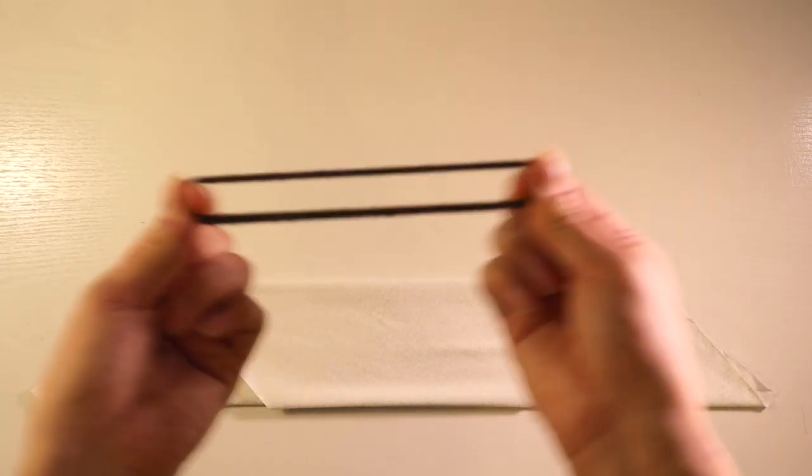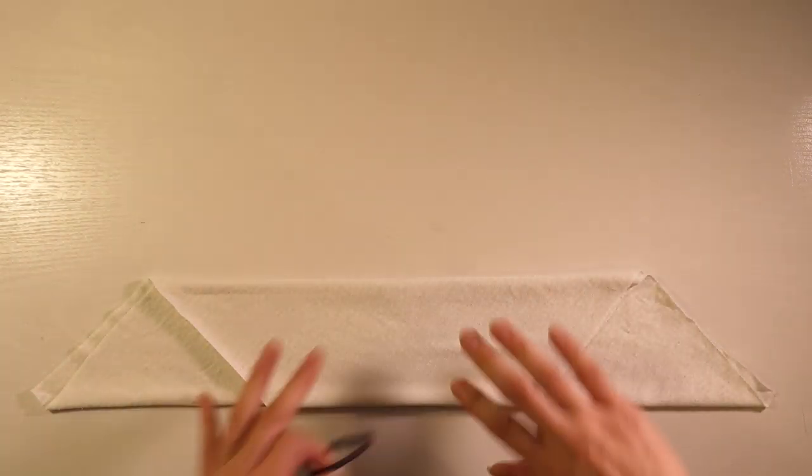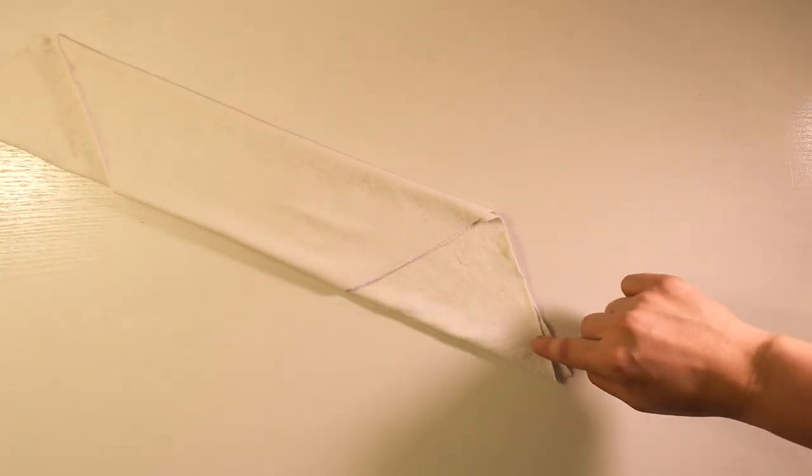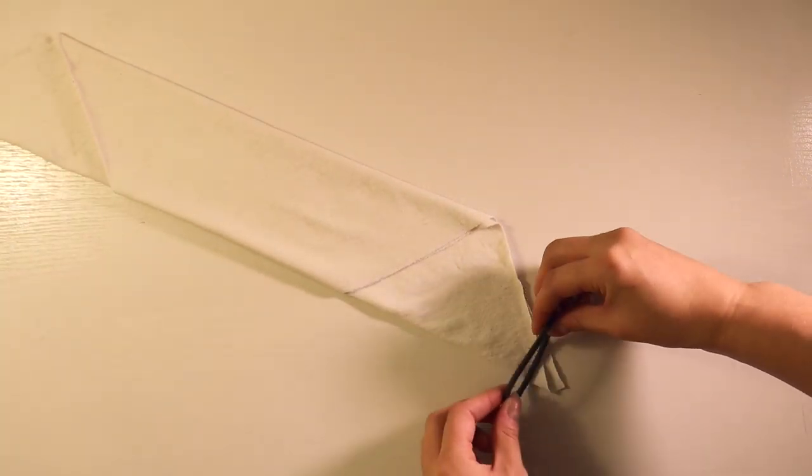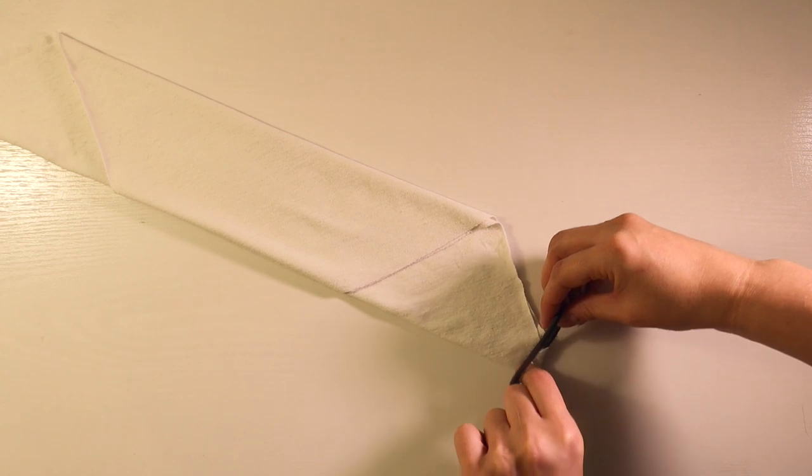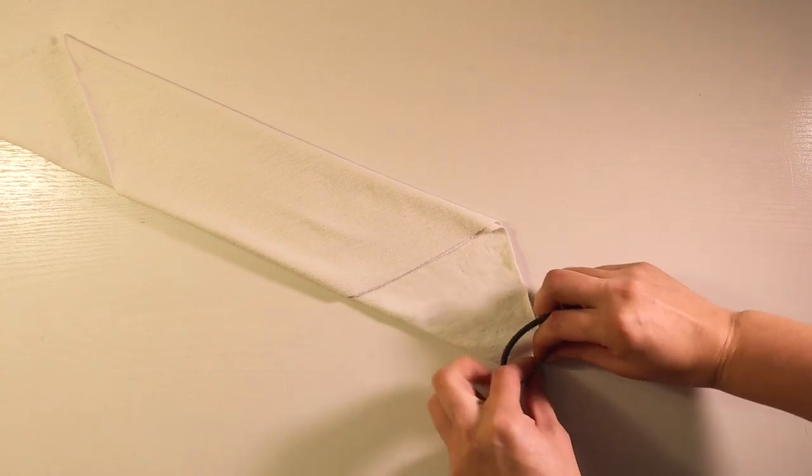Now for this next step you're going to take your hair ties or your rubber bands and you're going to roll the end corners around the hair ties. So first I place the hair tie over the corner and I'm just going to roll the fabric around the tie.